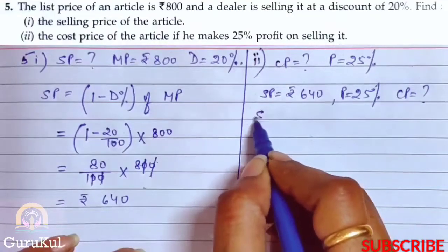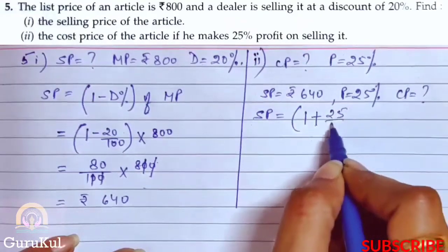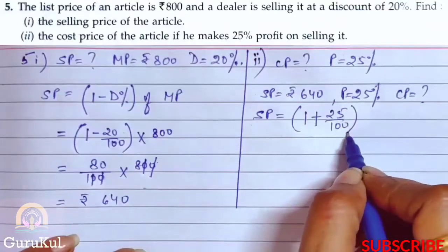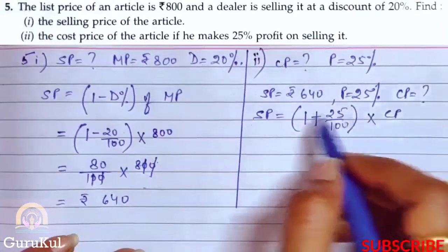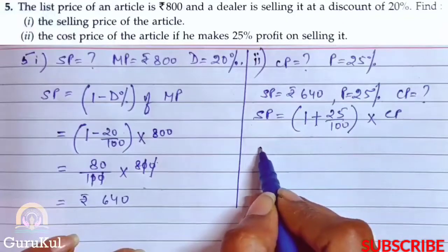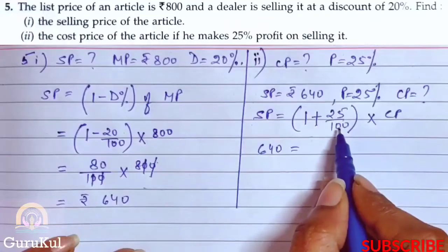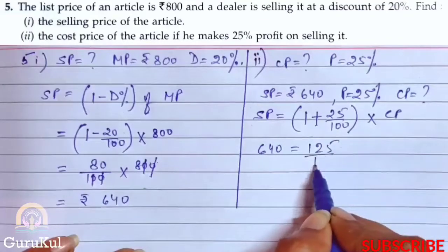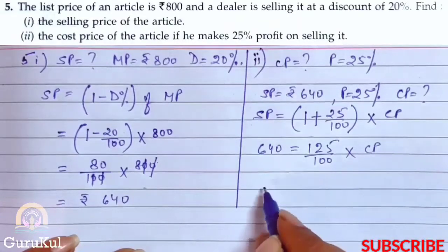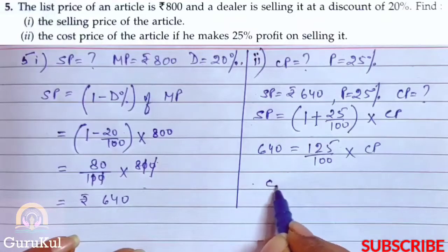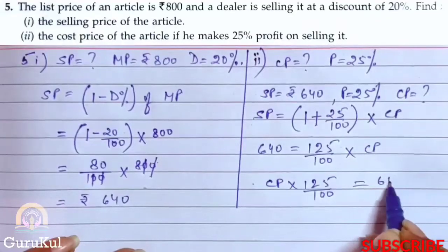So formula is SP equals 1 plus 25 by 100 bracket closed into CP. CP is unknown. So we will write it. Now we will place the value. SP ke jaga 640 equals 125 by 100 into cost price.